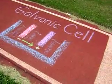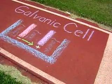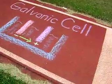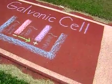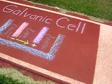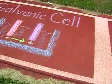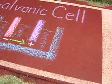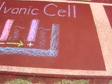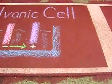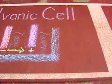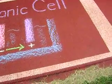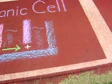A galvanic cell consists of two electrodes or metallic conductors that are in electrical contact with an electrolyte and ionically conducting the medium inside the cell. The electrolyte is typically an aqueous solution of an ionic compound.